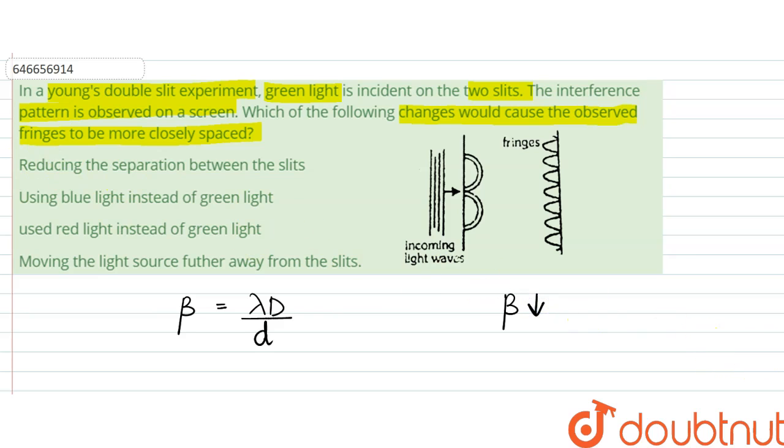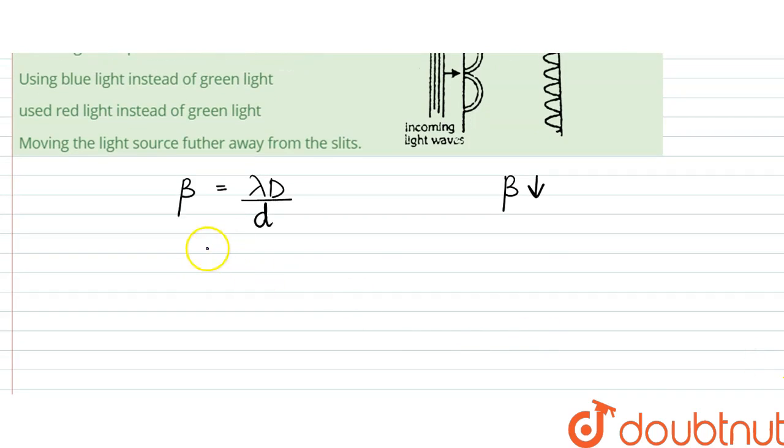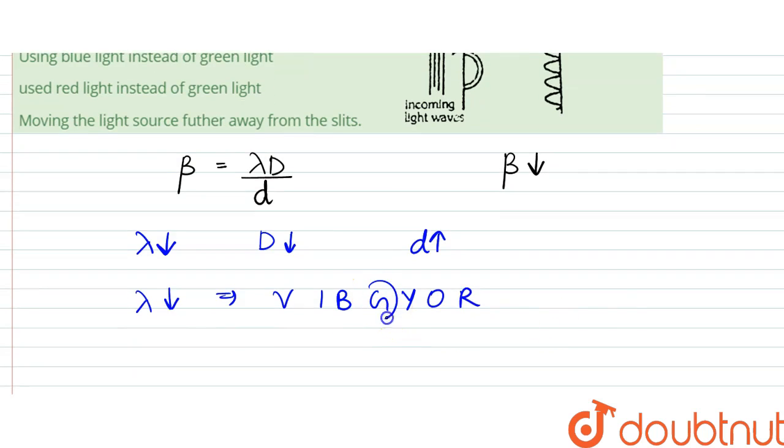Beta would decrease when lambda decreases, the wavelength used, or d decreases, or else the slit size increases. So if lambda decreases, that means since we are using visible light colors, we are using green light here.